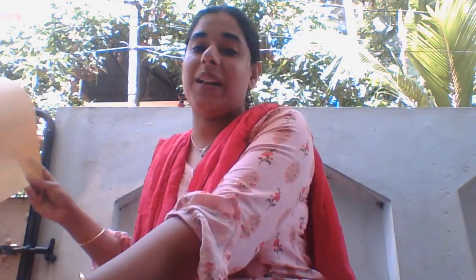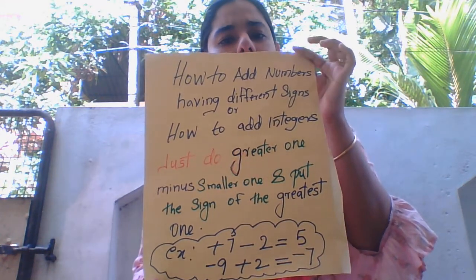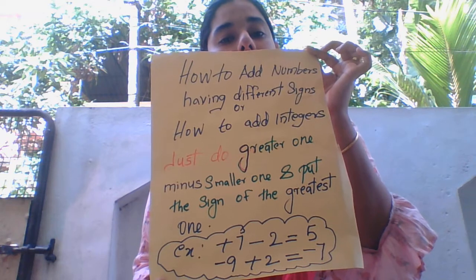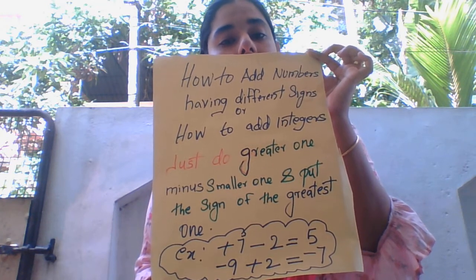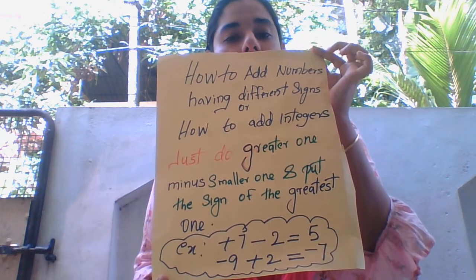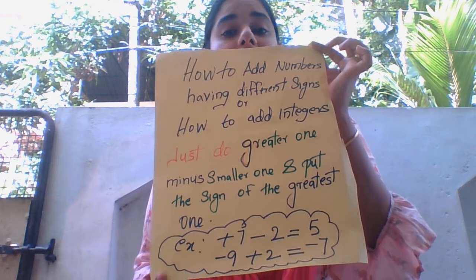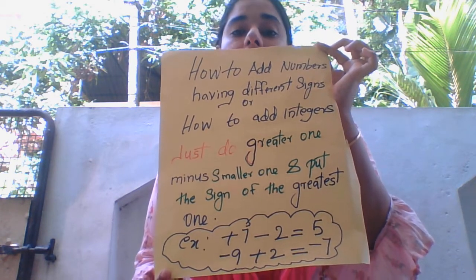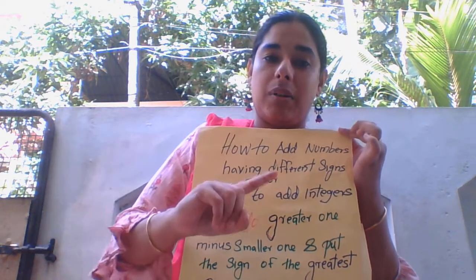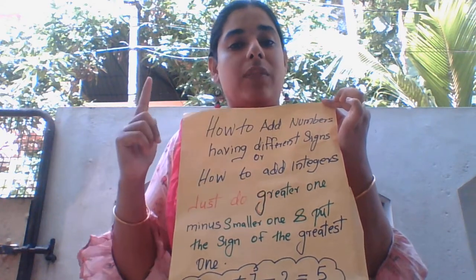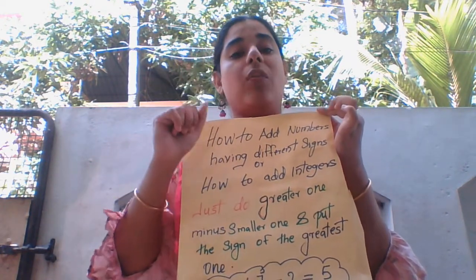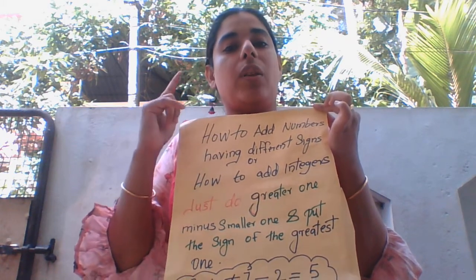Now let's look at how to add numbers of different signs. If both have different signs, take the greater number minus the smallest one, and put the sign of the greatest number. For example: negative 7 plus 2 — both have different signs. The greatest number here is negative 7 in absolute value, so 7 minus 2 equals 5. What sign do we put? The greatest number's sign is negative, so negative 5 is the answer.